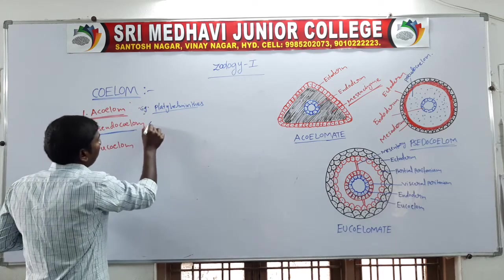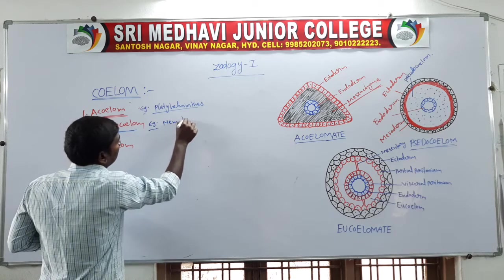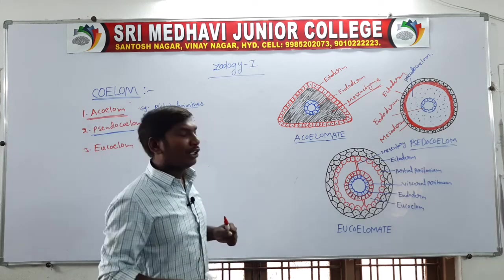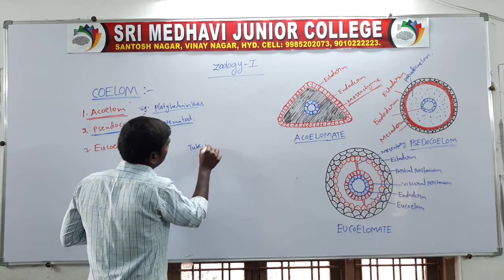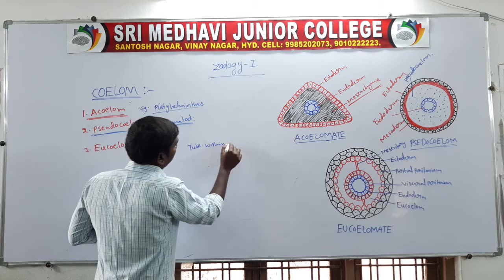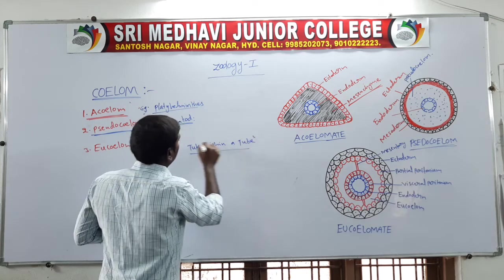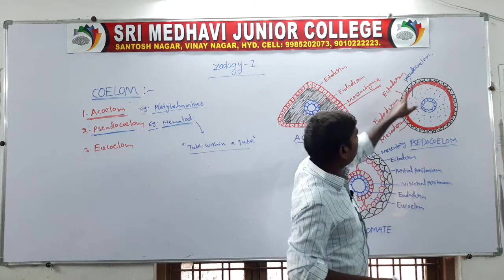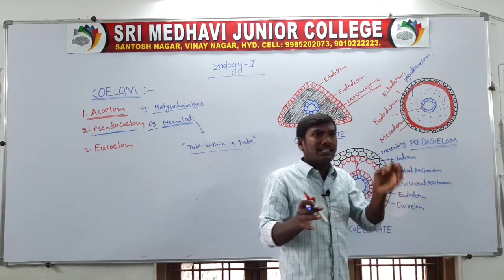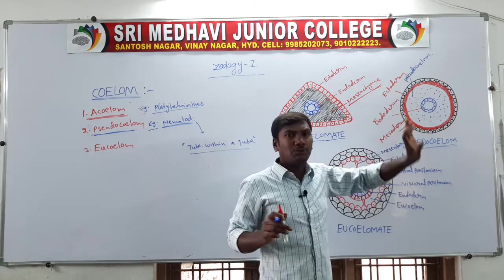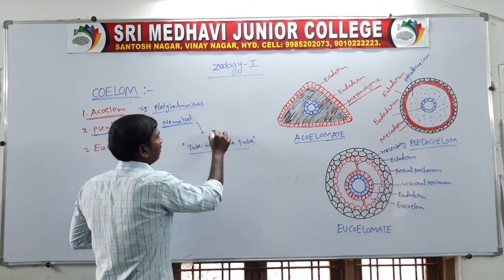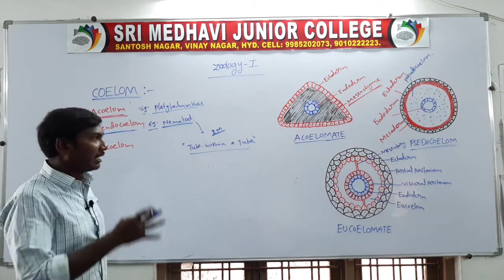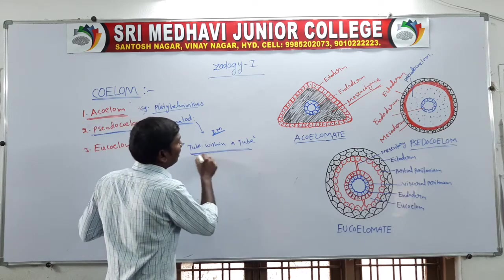Example phylum is Nematoda. The nematodes first exhibit a tube-within-a-tube organization — one outer tube and one inner tube. This is a two-marks very important question: which organisms exhibit tube-within-a-tube organization? Answer: nematodes exhibit tube-within-a-tube organization.